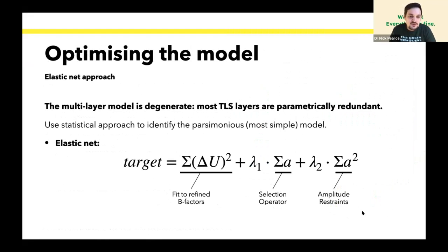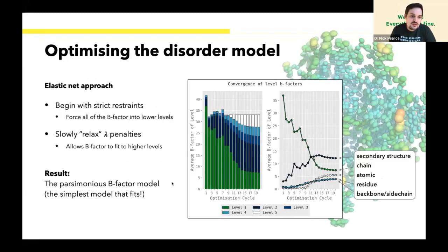Unfortunately, things aren't so simple. This model is degenerate because you can take out a lower level, add that component to a higher level, and get exactly the same output. So we need to use a statistical approach to ensure we get the parsimonious model, the simplest model that explains the disorder using the smallest number of components. We use elastic net, which is a nice way to force it to adopt a simpler model and then relax it into a more complex model. We begin by using strict restraints on this elastic net model, and that forces a lot of B-factor into the lower levels of your hierarchy. Then as we gradually relax it, that component goes away because other components of the model are picking up more of the detail, and this gives you the parsimonious B-factor model.